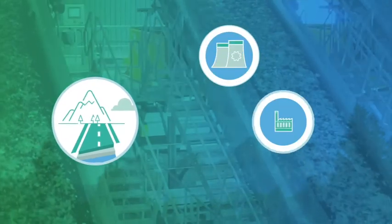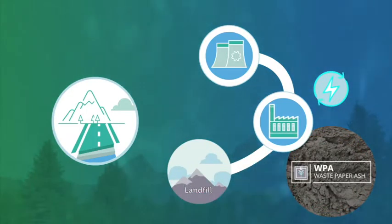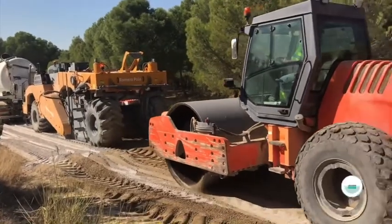Meanwhile, the process to generate energy from paper rejects leaves behind paper ash. The Spanish innovation uses this ash to replace both the cement and the lime used in road construction.